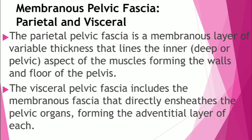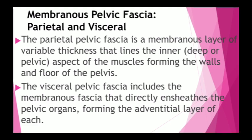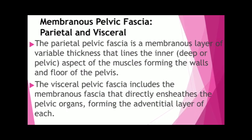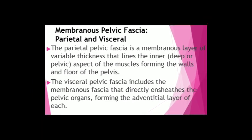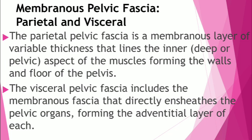The anterior-most part of the tendinous arc is what we call the puboprostatic ligament in males and pubovesical ligament in females. It connects the prostate to the pubis in the male, and in the female it connects the fundus of the bladder to the pubis. The posterior-most part of the tendinous arc runs as the sacrogenital ligament from the sacrum around the side of the rectum and attaches to the prostate in males or the vagina in females.